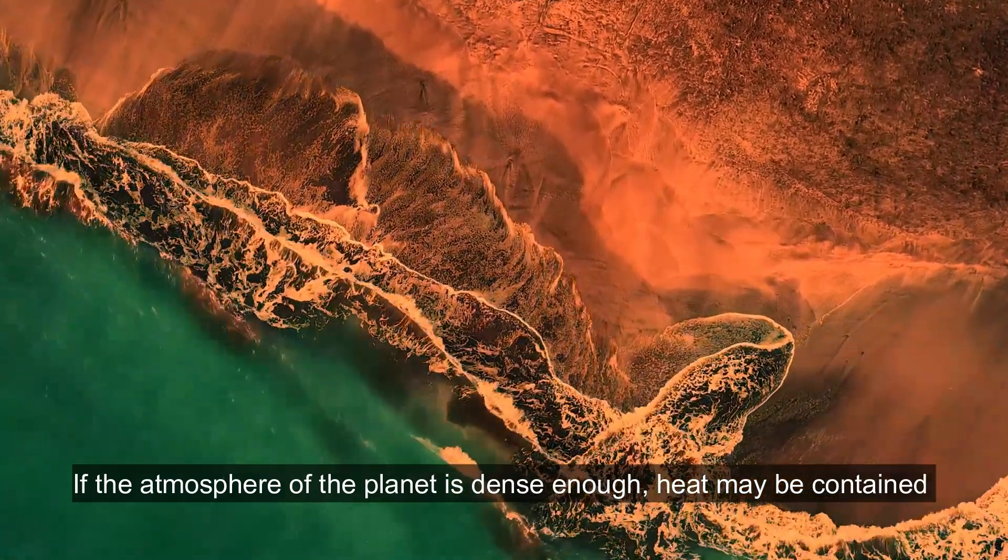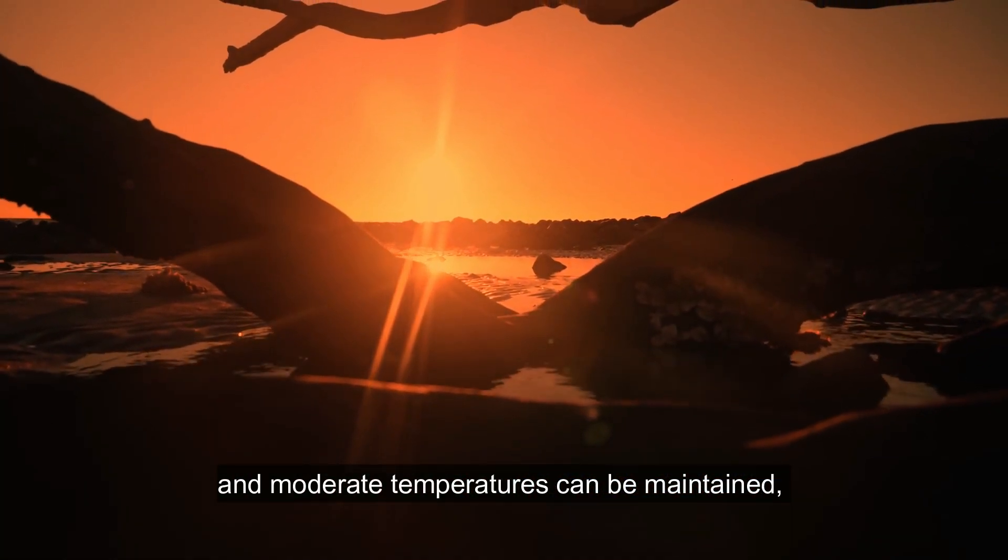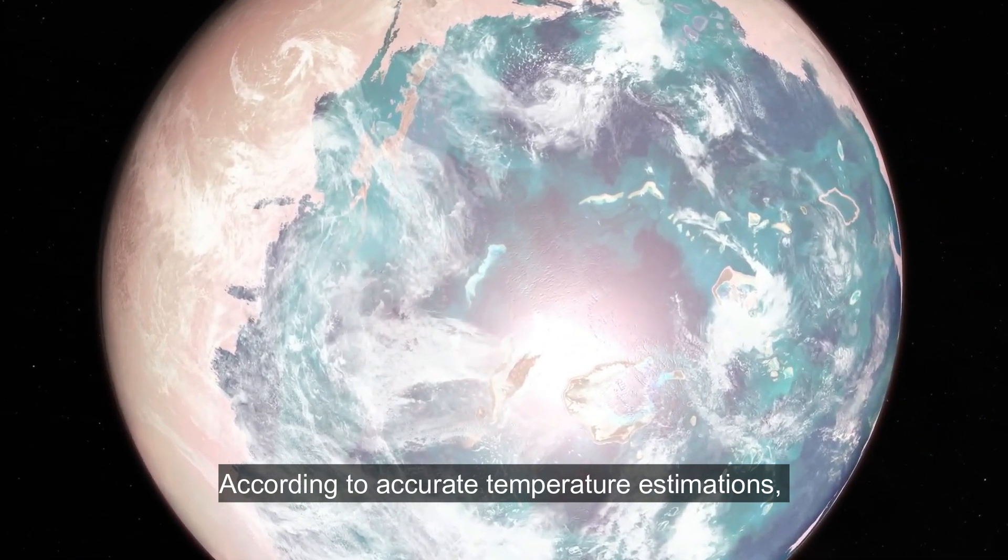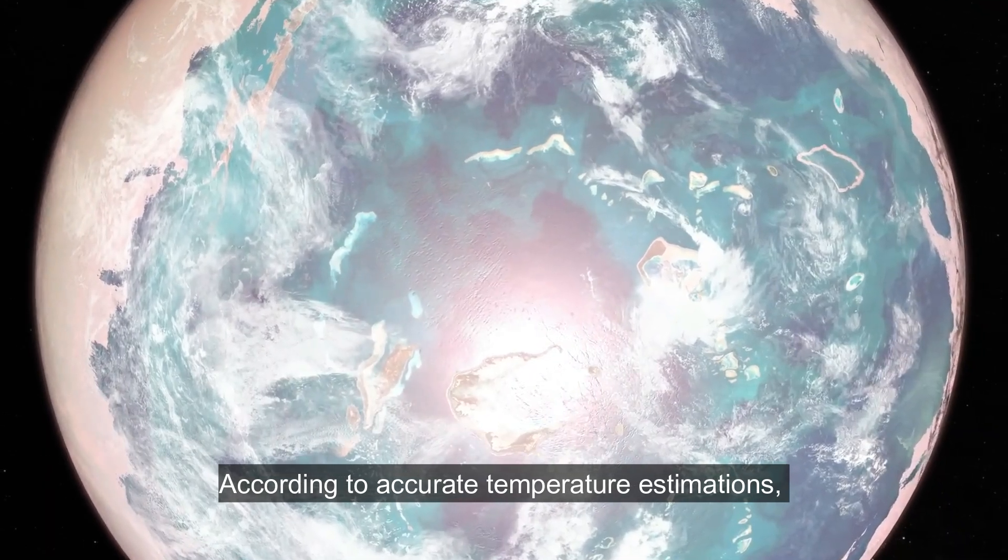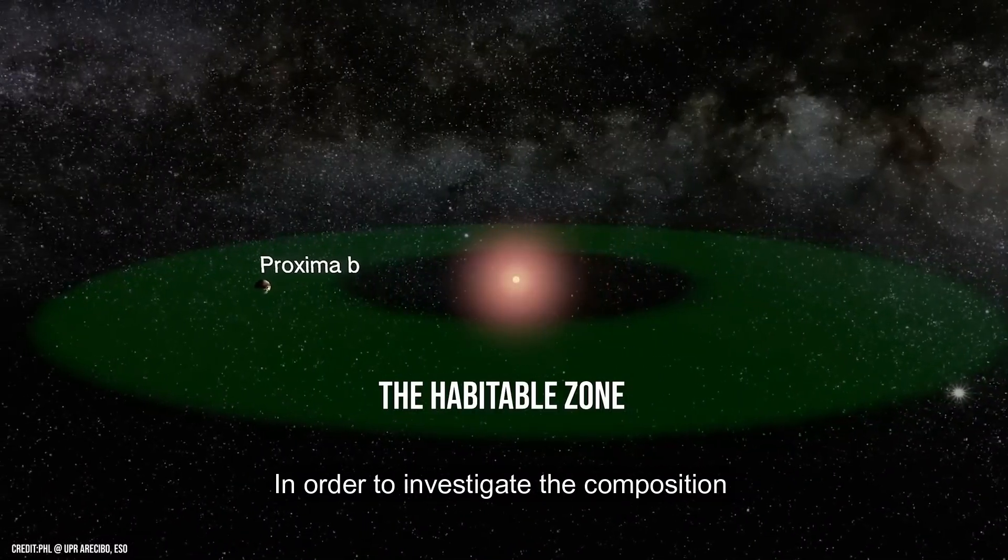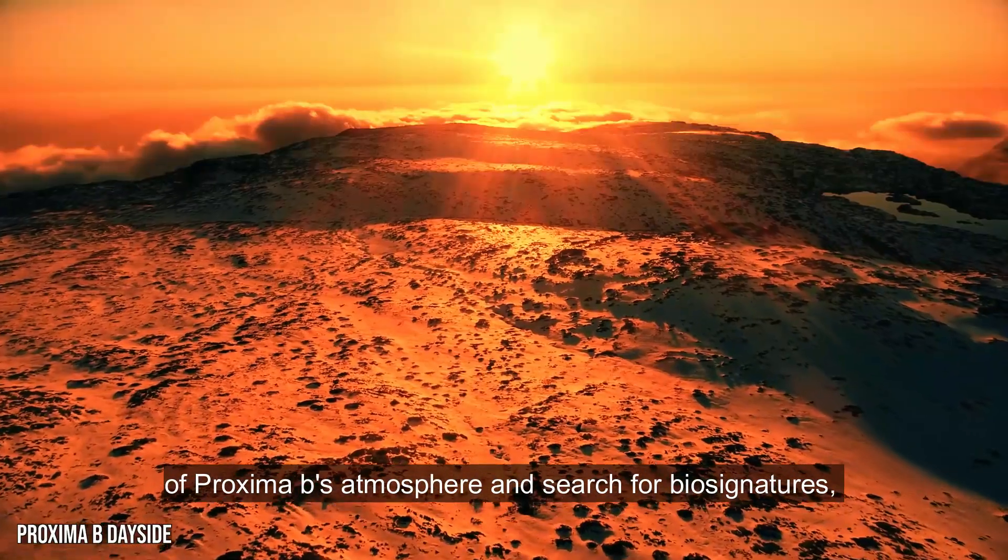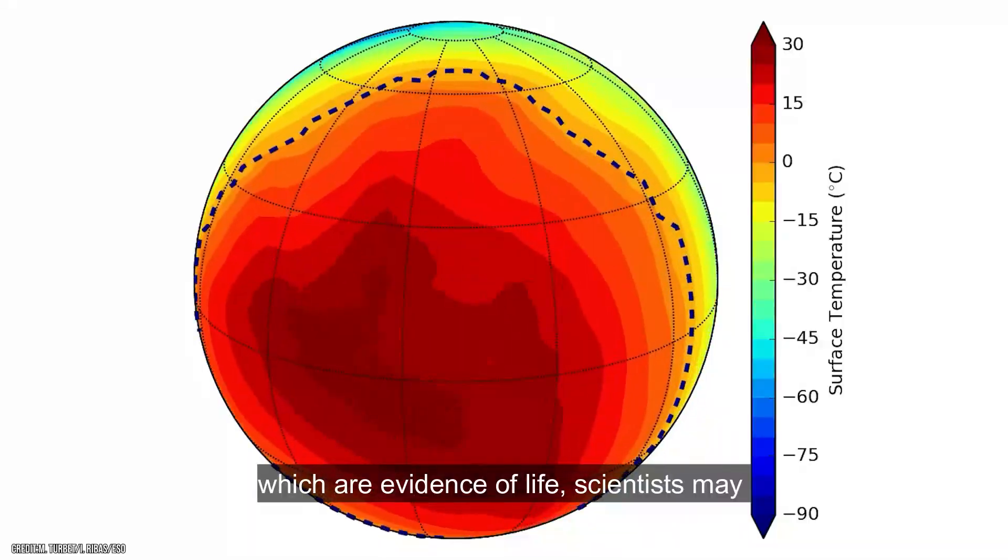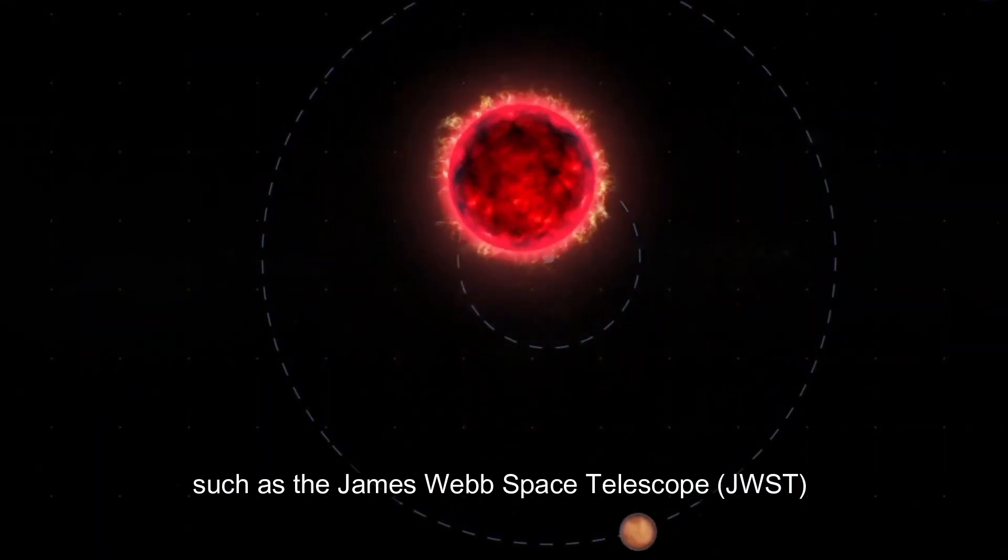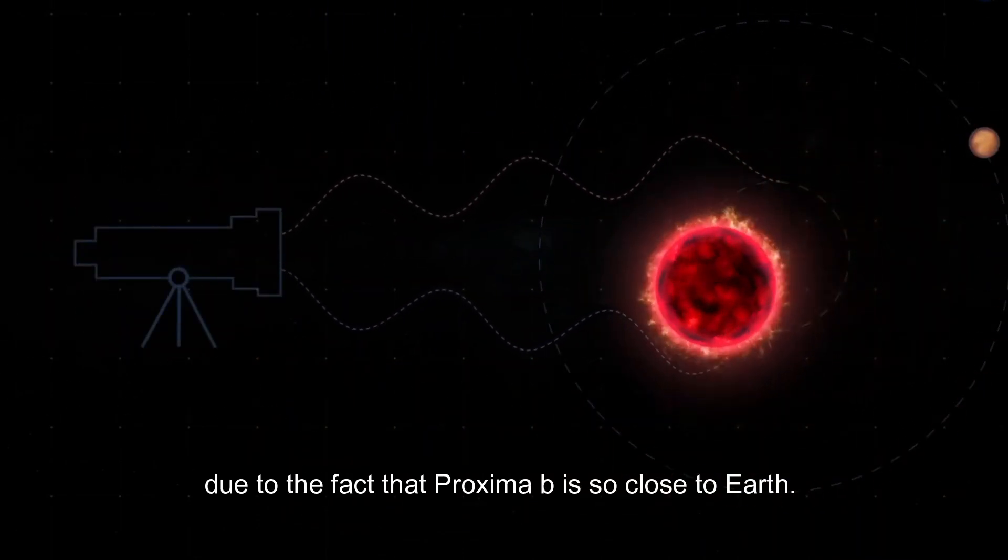If the atmosphere of the planet is dense enough, heat may be contained and moderate temperatures can be maintained, which will allow liquid water to remain on the surface. According to accurate temperature estimations, the surface temperature may be able to sustain liquid water in the habitable zone. In order to investigate the composition of Proxima B's atmosphere and search for biosignatures, which are evidence of life, scientists may employ cutting-edge telescopes, such as the James Webb Space Telescope, due to the fact that Proxima B is so close to Earth.